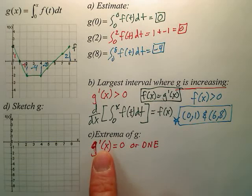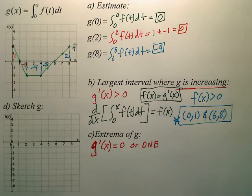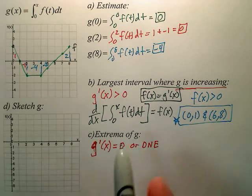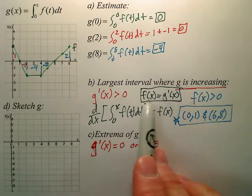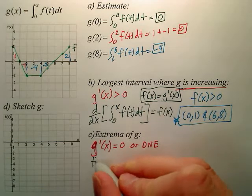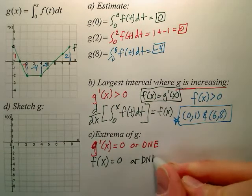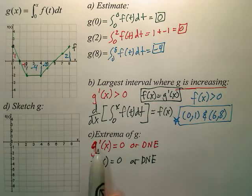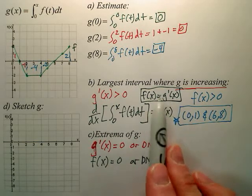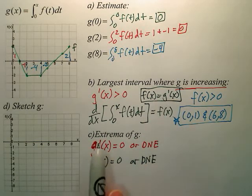So instead of putting it as g prime, can I replace g prime with f of x like we said right here? So we're basically finding where is f of x equal to 0 or does not exist. Instead of g prime, we're doing f of x because they're synonymous. Because we just said that up here, it's the building block. So this equals this.